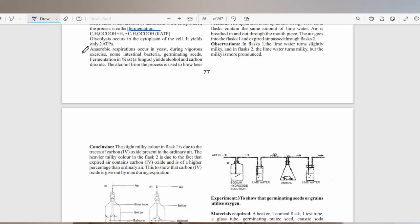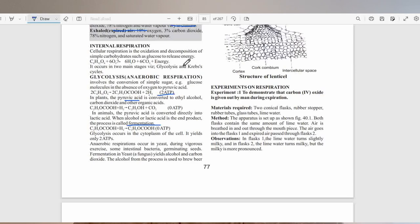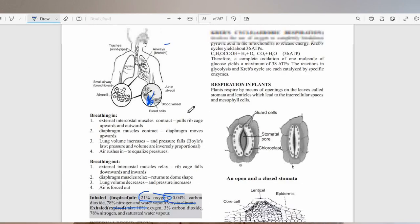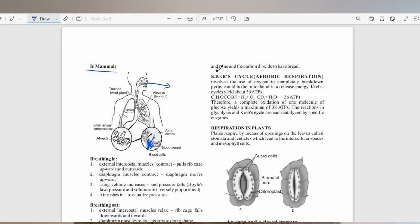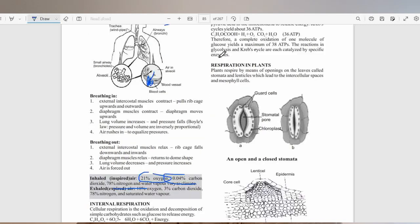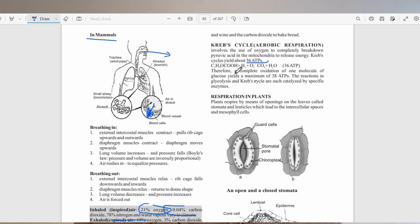Anaerobic respiration occurs in yeast, during vigorous exercise, in some intestinal bacteria, and in germinating seeds. Fermentation in yeast, which is a type of fungus, yields alcohol and carbon dioxide. The alcohol from this process is used in brewing, in the production of beer and wine. The carbon dioxide produced is of importance in the bread industry, where it helps the dough to rise.